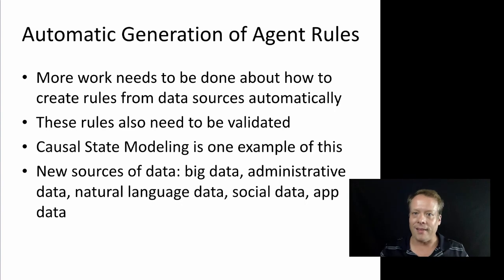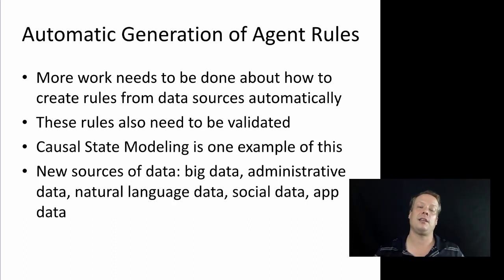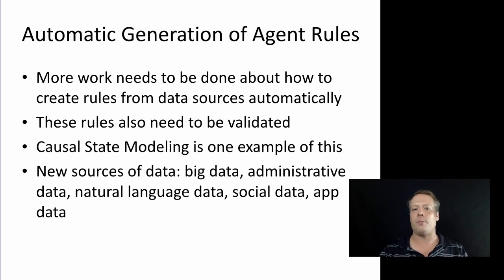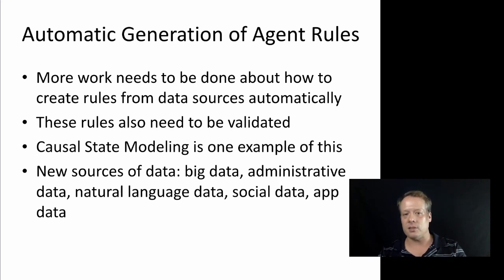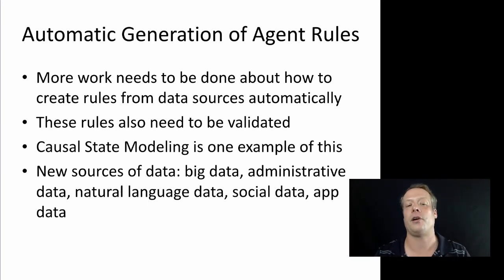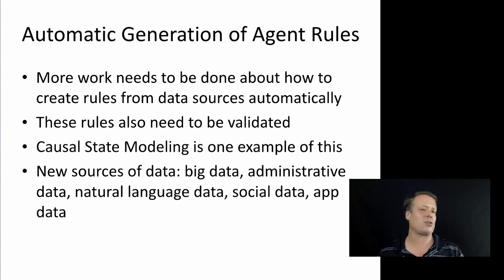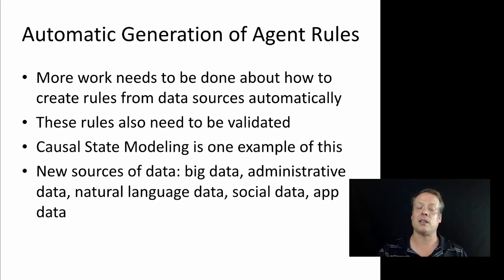Of course, these rules also need to be validated — by building up the rules, making predictions, and seeing if those predictions carry out. Why do this at an agent level? Without agent rules that predict individual-level behavior, we don't have the ability to assess what would happen if we changed the incentive structure for one particular individual. Causal state modeling gives one example, but you could also use decision trees, associative rules, or classifier systems. With all the new sources of big data — administrative data, natural language data, text-to-speech data, social data, and app data — capitalizing on this will powerfully change how agent-based modeling is perceived and give us a much more powerful toolkit.